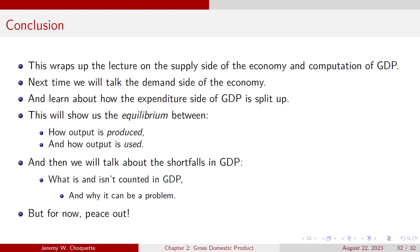This wraps up the lecture on the supply side of the economy and the computation of GDP from the supply perspective. Next time we're going to talk about the demand side — how the expenditure side of GDP gets split up — which will show us the equilibrium between how output is produced and how output gets used. From there, we'll talk about the shortfalls in GDP: how GDP is not a perfect measure of economic activity, because there are some things that aren't counted in GDP — some because they shouldn't be, and some because they should be but are hard to measure.